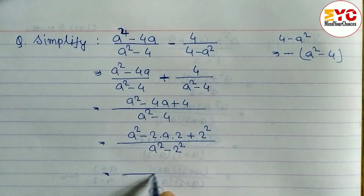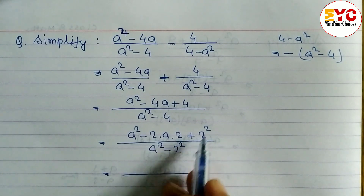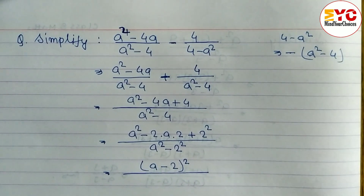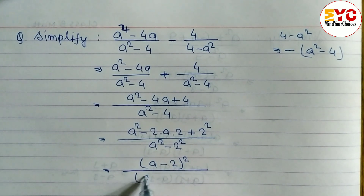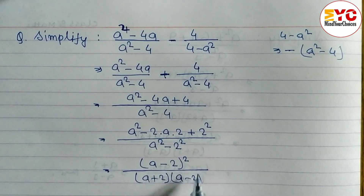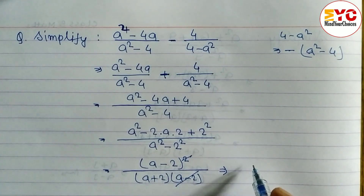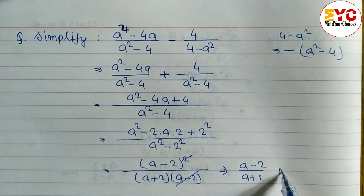The numerator a squared minus 4a plus 4 is in the form of a squared minus 2ab plus b squared, which equals a minus b whole squared — so we write a minus 2 whole squared. The denominator a squared minus 4 is in the form of a squared minus b squared, so we write a plus 2 times a minus 2. Now a minus 2 squared in the numerator and a minus 2 in the denominator cancel, leaving a minus 2 by a plus 2 as the final answer.